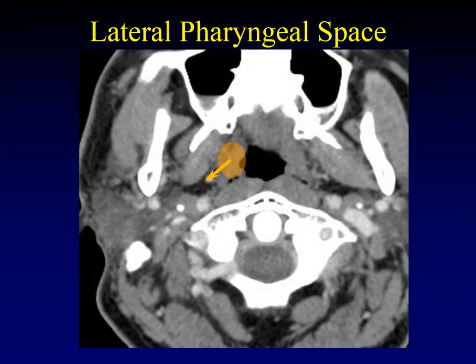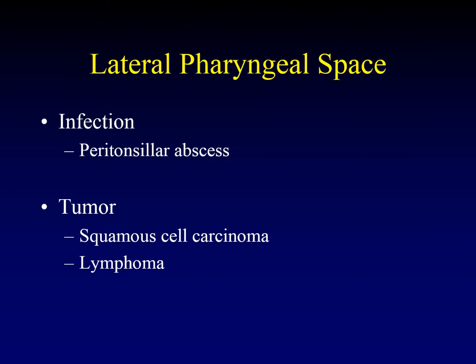Let's move on to the lateral pharyngeal space. Lesions that arise in this location will push the parapharyngeal fat laterally and posteriorly — predominantly laterally, a little bit posteriorly. The sorts of lesions that arise here include infections, particularly peritonsillar abscess, and tumors. The two big tumors are squamous cell carcinoma and lymphoma.